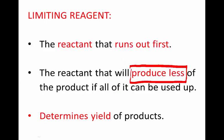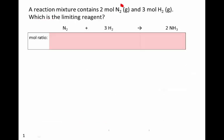It also determines the yield of the products, but we're going to use the second bullet: it's the reactant that will produce less to help us determine which is the limiting reagent.